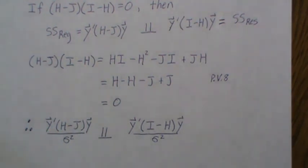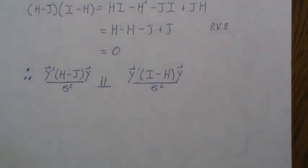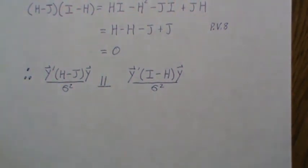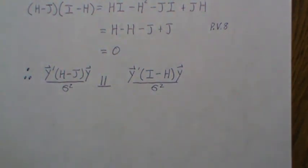This independence is crucial because dividing two independent chi-squared random variables yields an F distribution — our F test statistic. That's all for today; the next video looks at how to test whether our model is useful using the ANOVA table and these distributional properties. I hope you enjoyed it — please like the video and subscribe so you don't miss the next one.